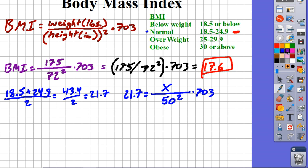Now, to get X by itself, we're going to have to multiply both sides by 50 squared and divide both sides by 703. So we can actually do that all at the same time. So 50 squared cancels, 703 cancels, that gives us X by itself. In our calculator, I would type 50 squared times 21.7 divided by 703.